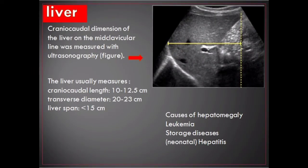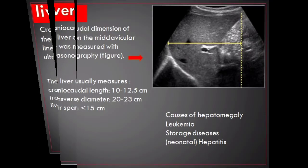The liver measures craniocaudal length between 10 and 12.5 centimeters, transverse diameter between 20 and 23 centimeters, liver span below 15 centimeters. Some causes of hepatomegaly are leukemia, storage diseases, and neonatal hepatitis.